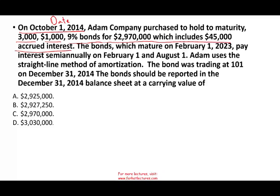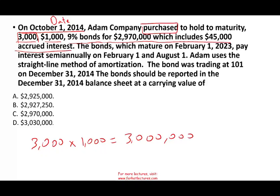What happened is Adam Company purchased — not issued — a bond. They purchased 3,000 bonds, each worth $1,000, so they purchased $3 million worth of bonds. They paid $2,970,000, of which $45,000 is accrued interest. Notice we are given a lot of information right in the first statement, so if you don't understand what is given, there is no way you can answer the question.